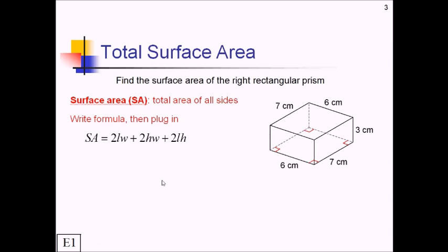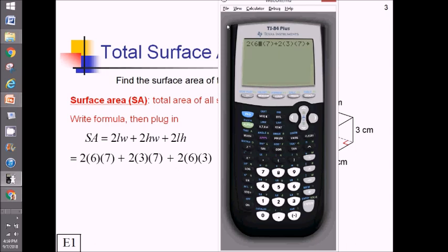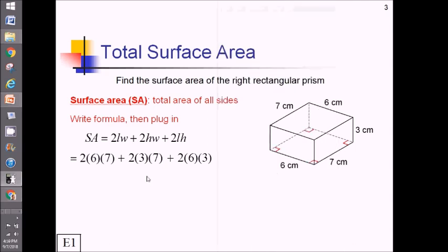So going and plugging in the different parts here. This first piece, we've got two times six times seven, length and width. For the next one, we've got two times the height of three, width of seven. For the next one, we've got two times length of six, height of three. And now let's just crunch the numbers here. So I've entered this whole string of stuff into my calculator. This one, I definitely could do without a calculator, but just to be on the safe side, if we're allowed to use one, we come up with 162.